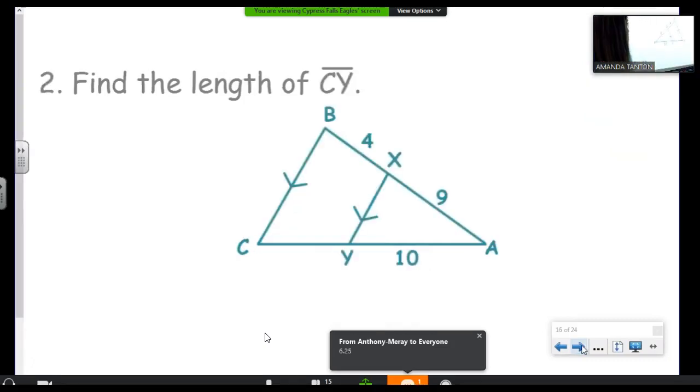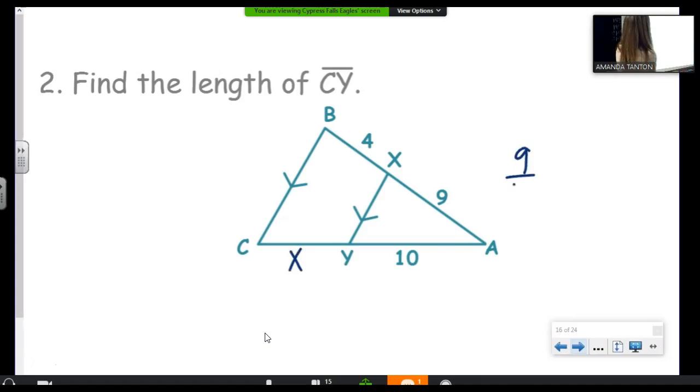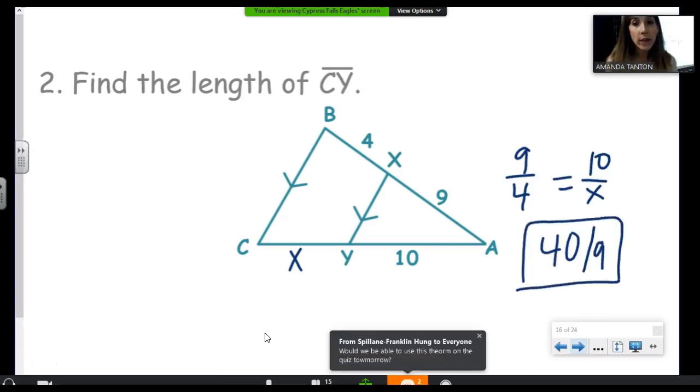Find the length of CY. Once again, super, super basic application. 9 is to 4 as 10 is to X. Cross multiply. The only, only way you can write your answer on this one is 40 ninths.